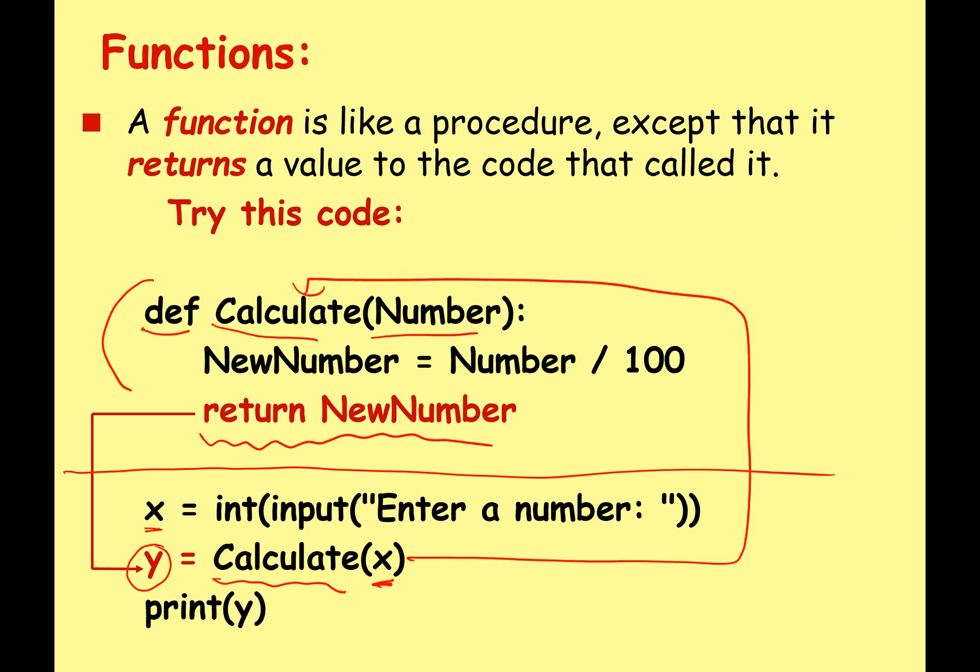That goes here, that will call this program. Whatever the value of x is will become the value of Number. Now NewNumber equals Number divided by 100, pretty simple, and then the result of NewNumber becomes y. So it's just like a procedure except that it returns a value back to the calling program.